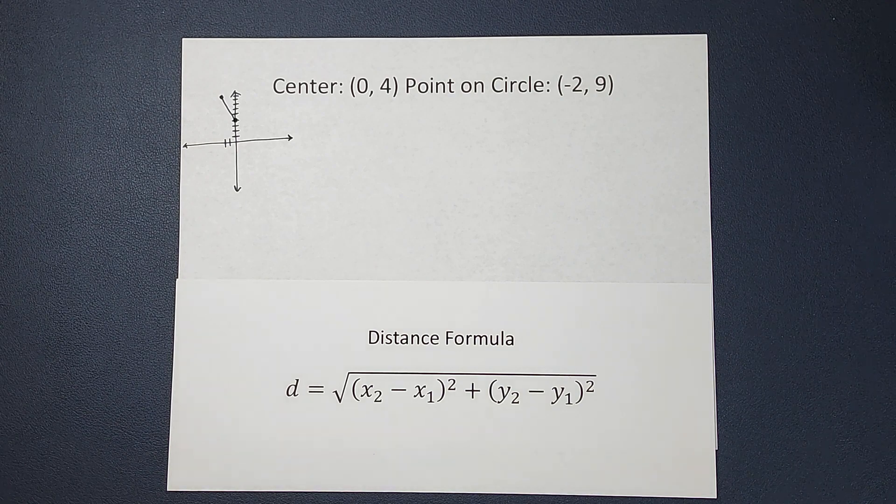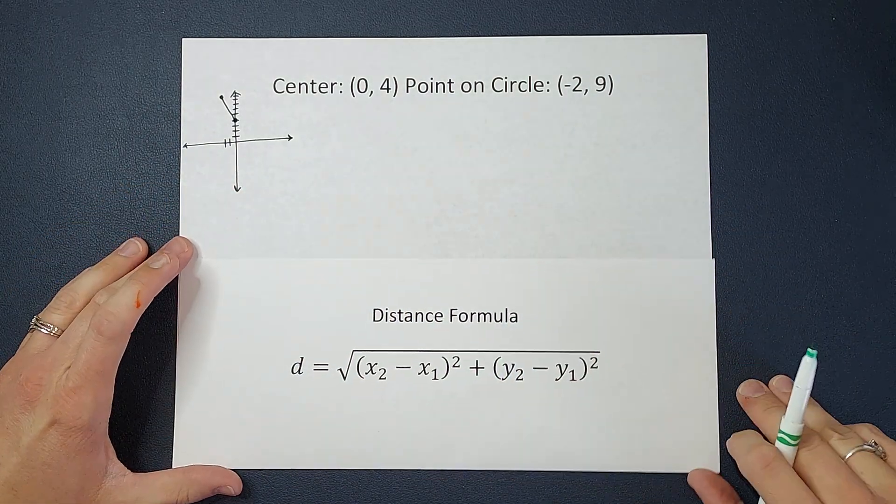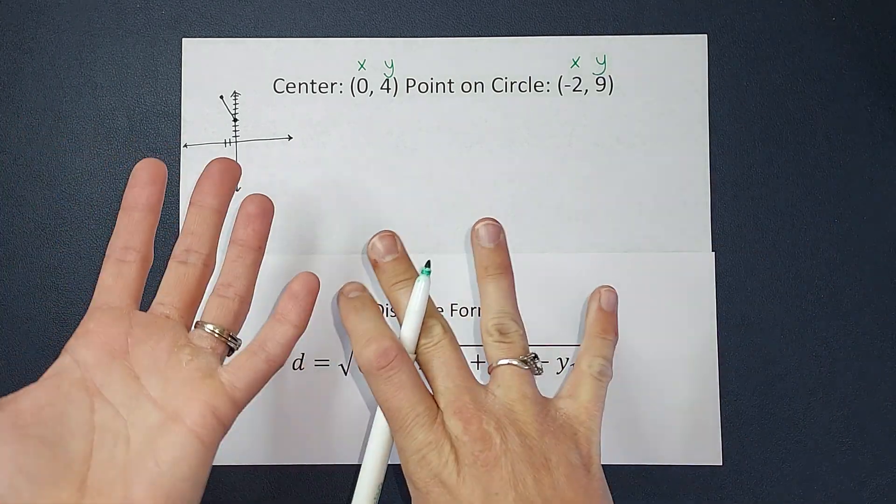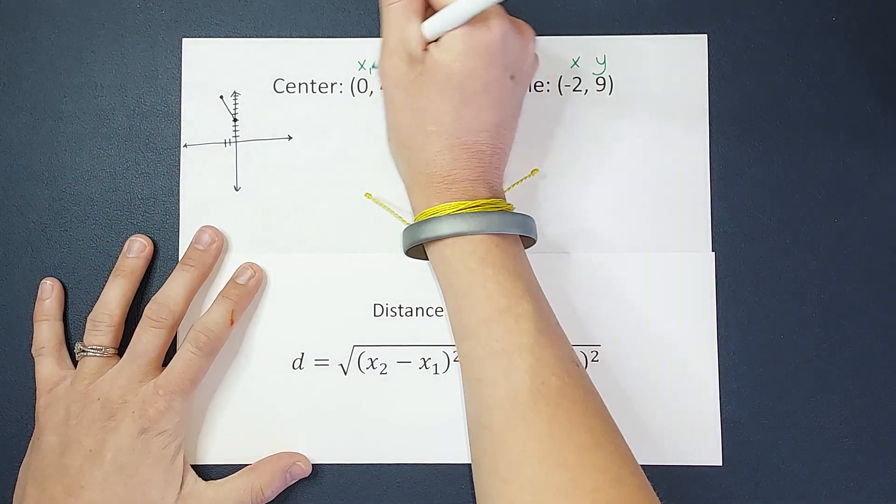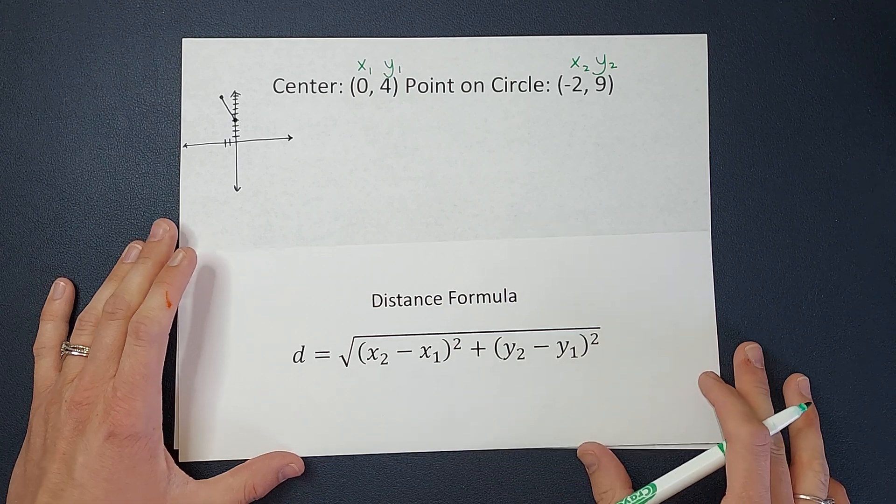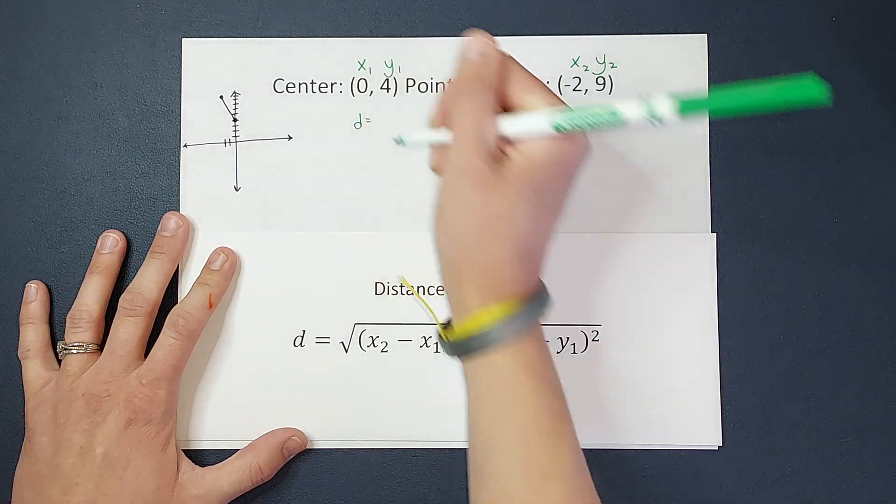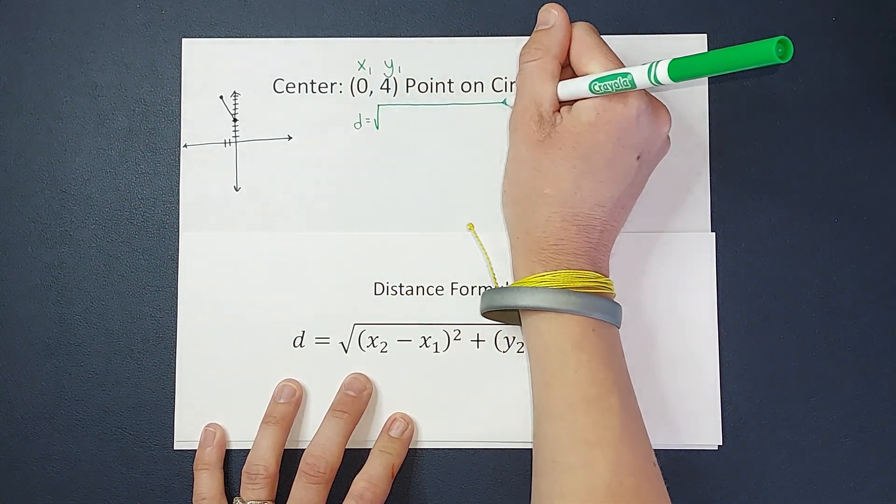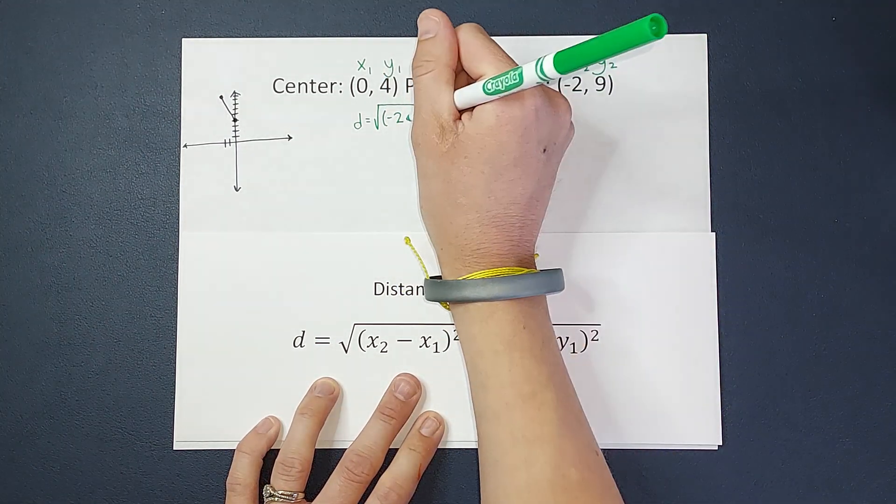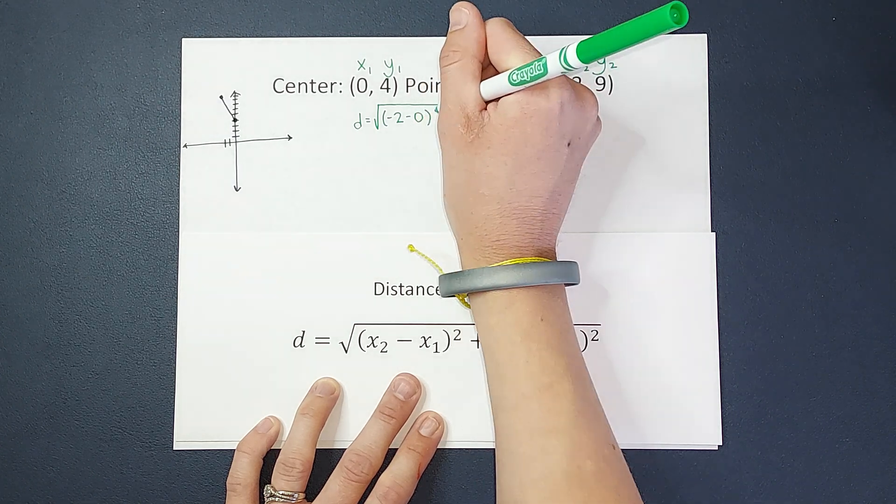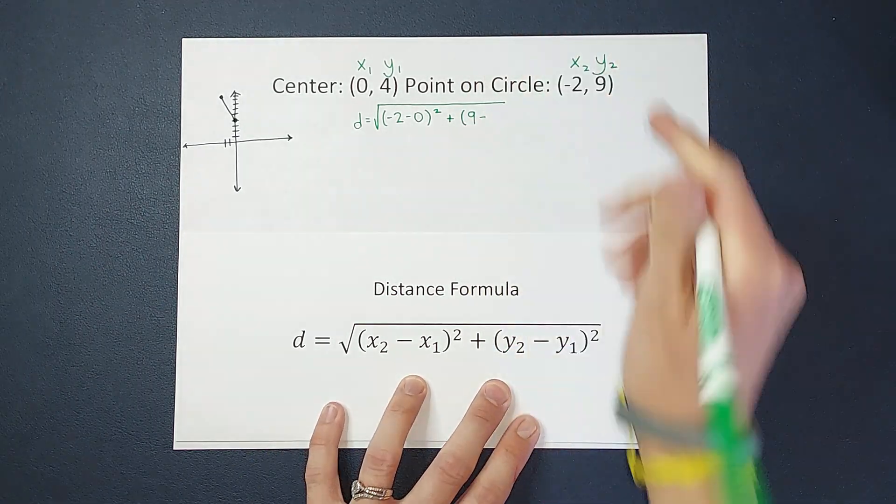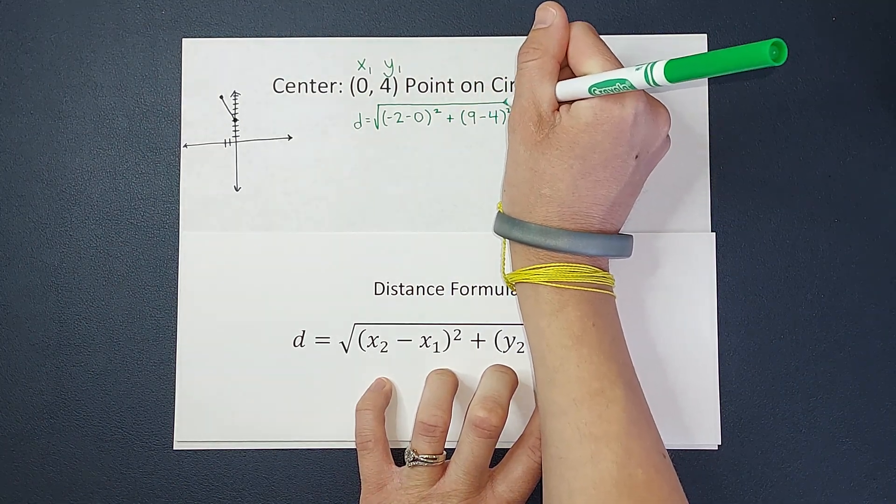So we have our two points that we are looking for the distance between. So first thing I like to do is label them. So we've got x₁y₁ and x₂y₂, and then we just decide which group is our 1s and which group is our 2s, so we'll just have these guys be the 1s and these guys be the 2s. And then I'm going to fill in my distance formula. So my distance is the square root of x₂, which is -2, minus x₁, which is just 0, squared, plus y₂, which is 9, minus y₁, which is 4, squared.